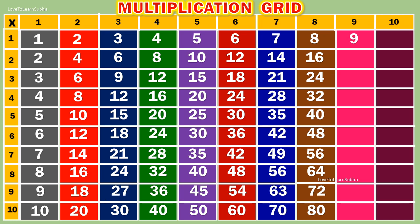Table of 9. 9 1s are 9. 9 2s are 18. 9 3s are 27. 9 4s are 36. 9 5s are 45.